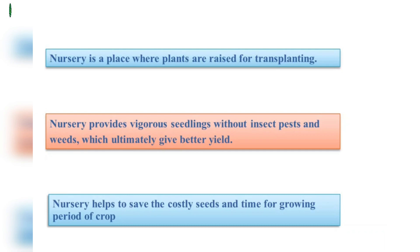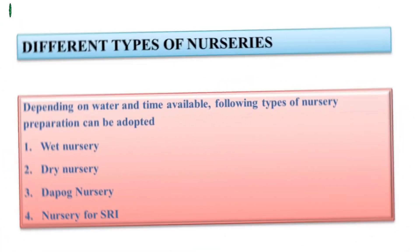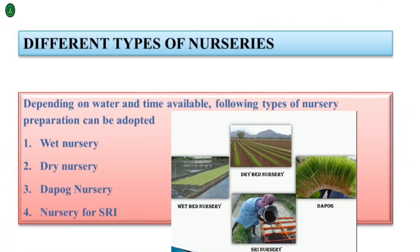From the nursery, the seed rate is very low, so costly seeds are saved, and the time required for the crop to grow is also less. Different types of nurseries — depending on water and time available, the following types of nursery preparation can be adopted.